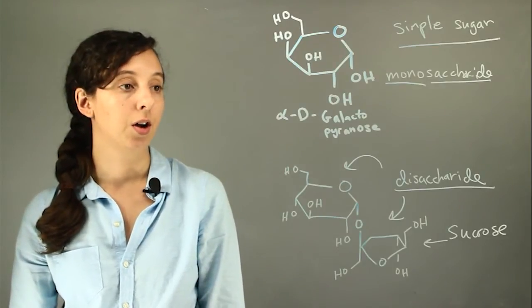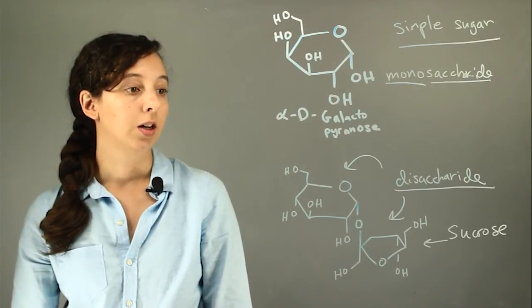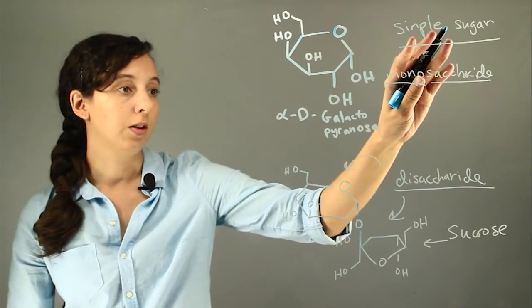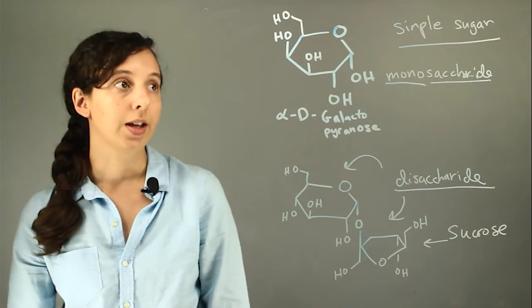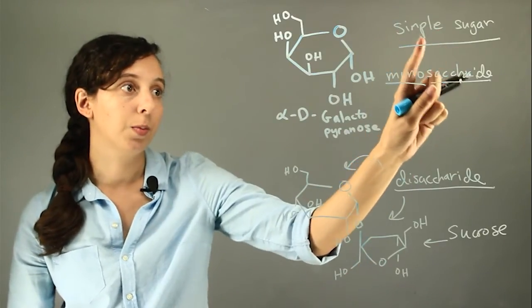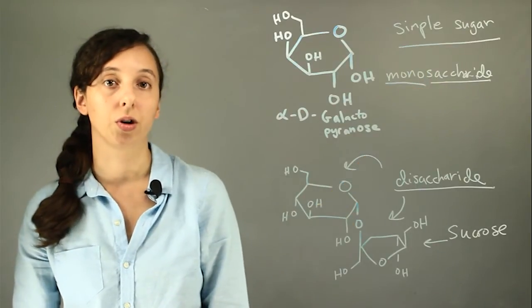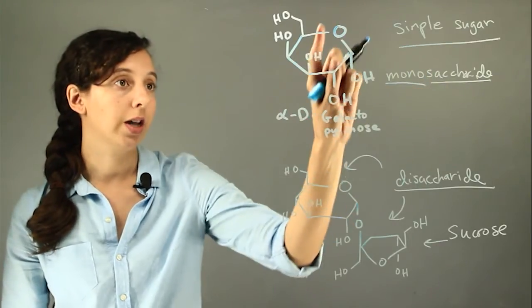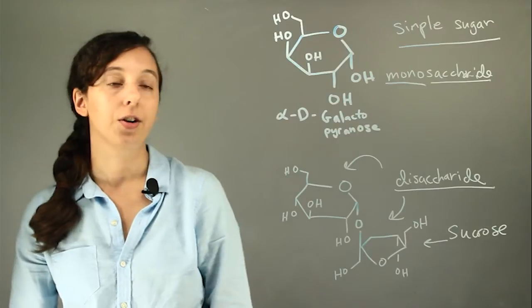And so the difference between a simple sugar and a complex sugar is just that a simple sugar cannot be broken down into more sugars. So if you start cutting galactose in half, you're not going to have a sugar anymore. You're going to have a couple of two or three carbon molecules.